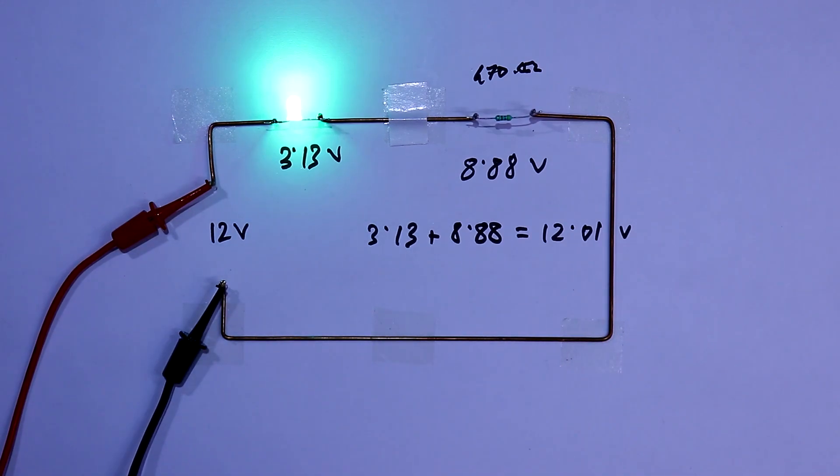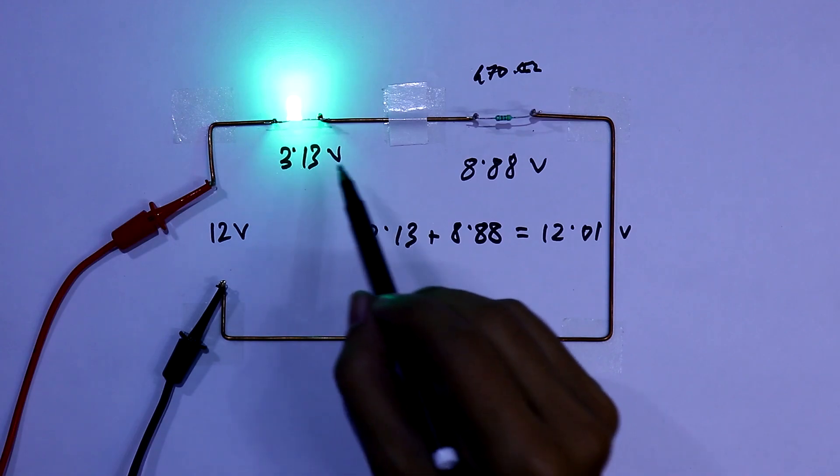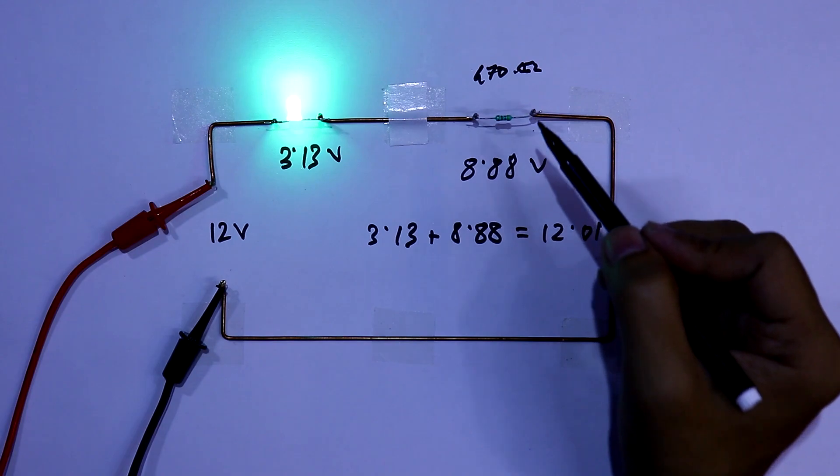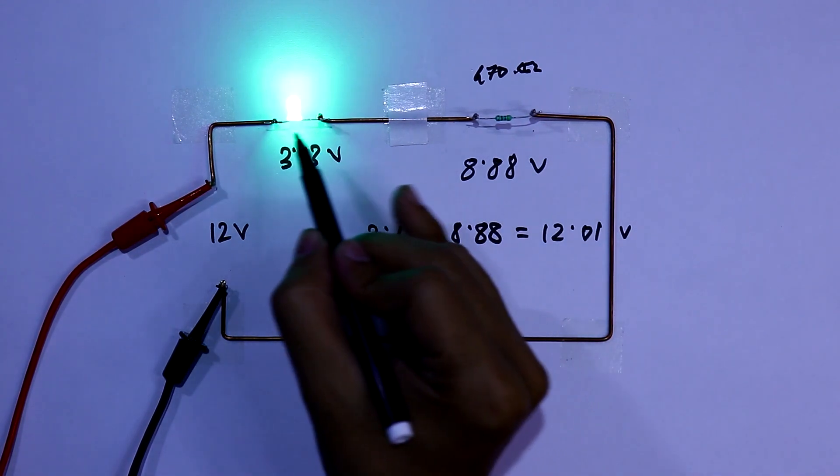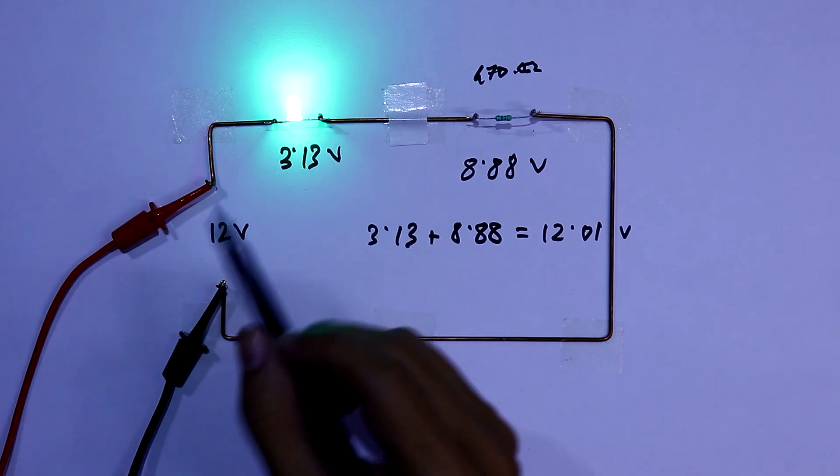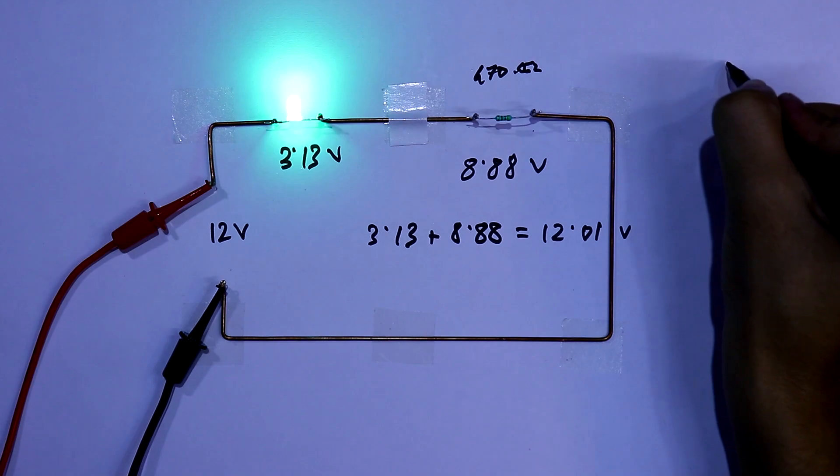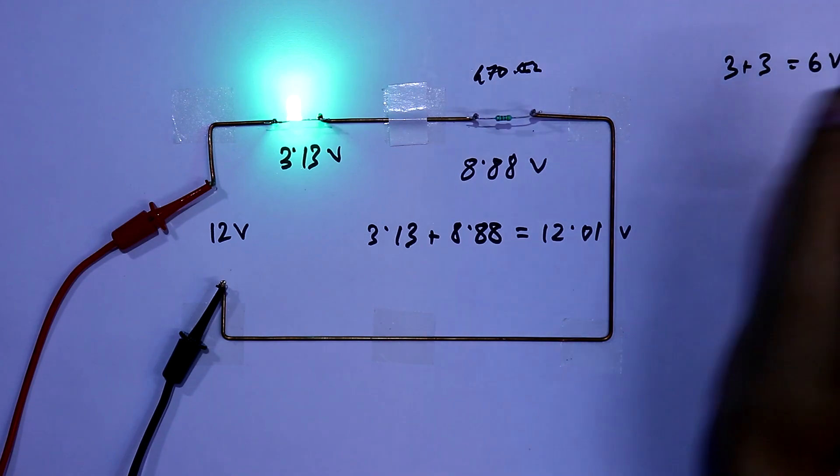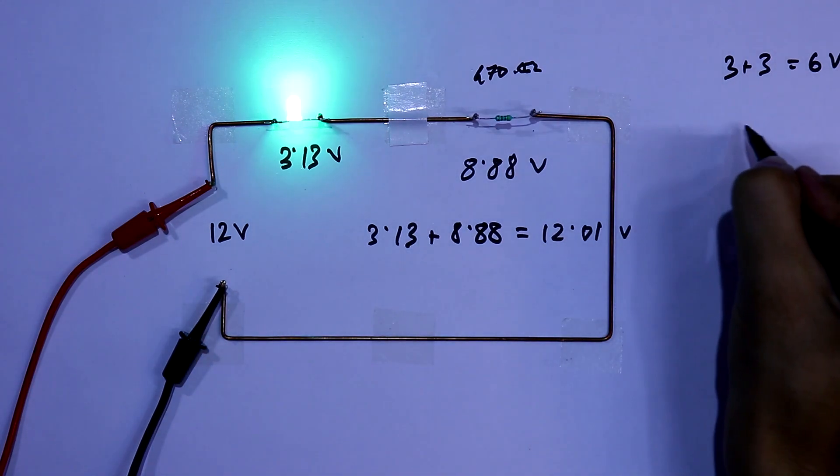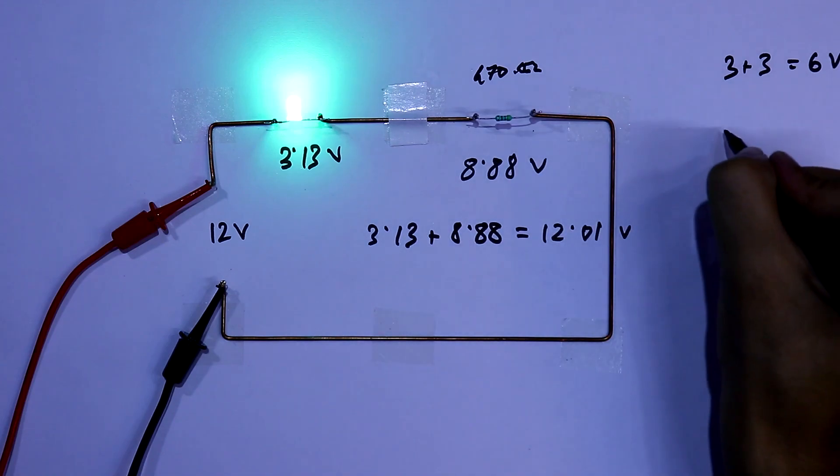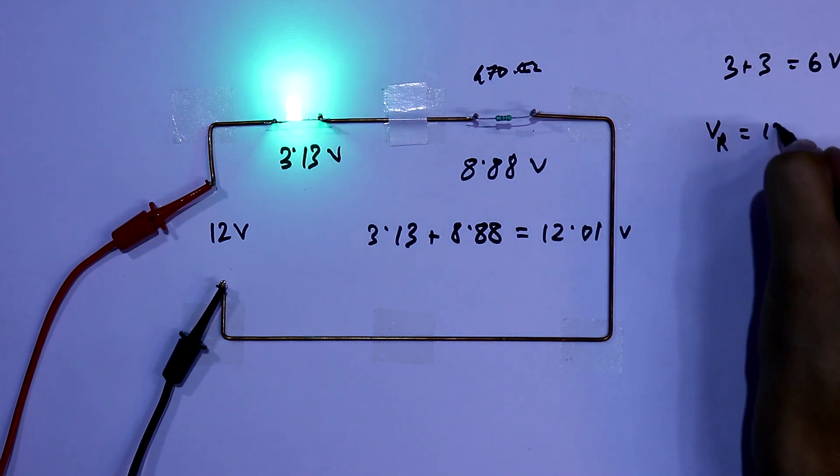Now if we want to light two LEDs in series at 12V, what will be the value of the resistor? As we know the voltage drop of the LED is 3V, so 3 plus 3 is 6V. Our power supply will be 12V. So the voltage drop of the resistor will be 12 minus 6, which is 6V.